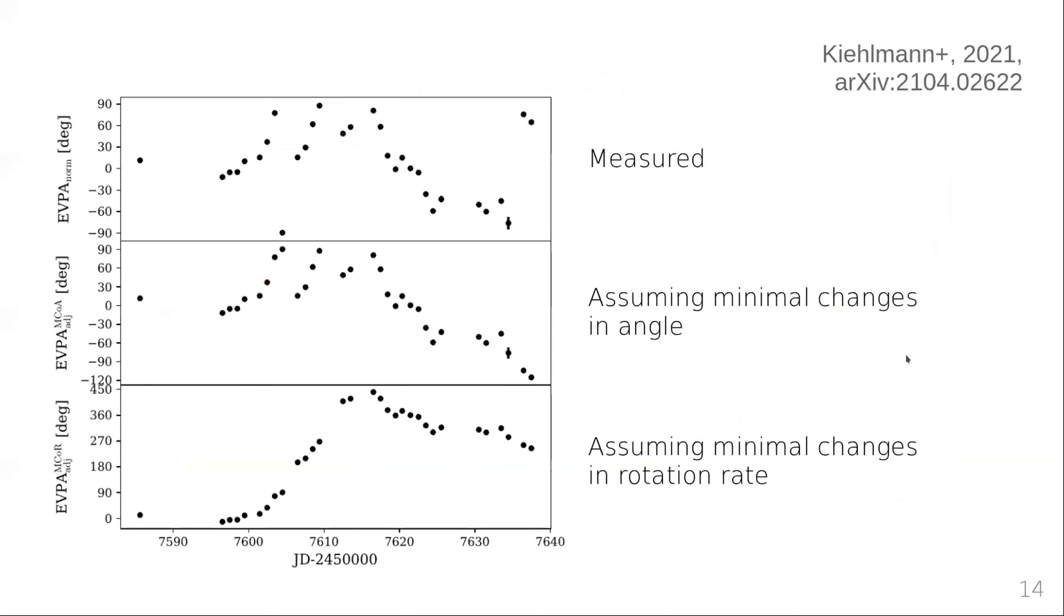But now reality kicks in. Here's one of our measured EVPA curves from the RoboPol program. This is what we measured. Here, as it's usually done, we assume that the EVPA changes minimally between measurements. So the only thing that happens here is we shift those two data points down by 180 degrees. Otherwise, the variability stays the same. So we have lots of rotations back and forth clockwise, counterclockwise.